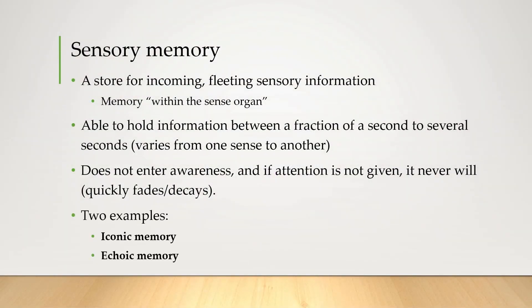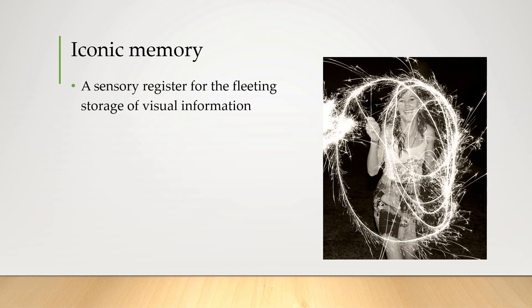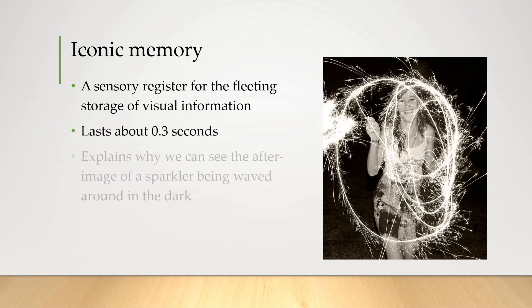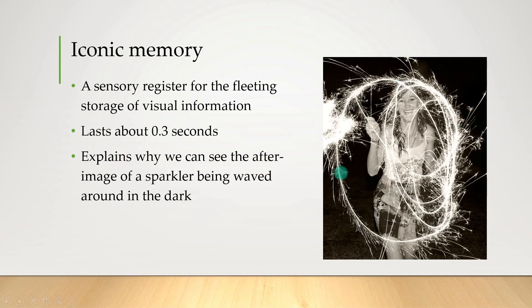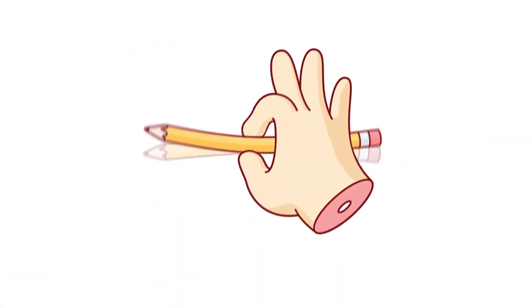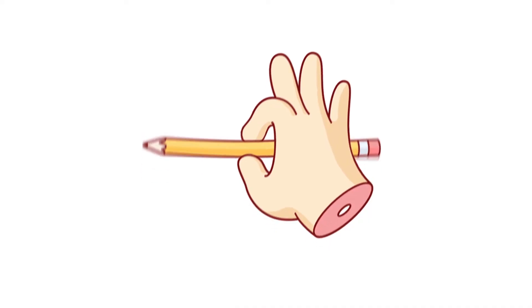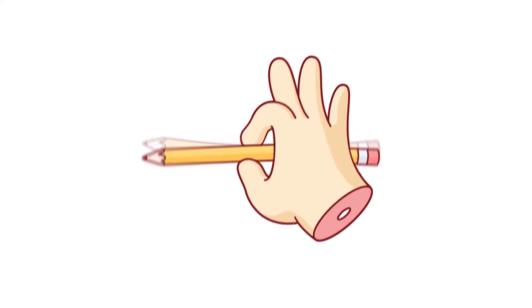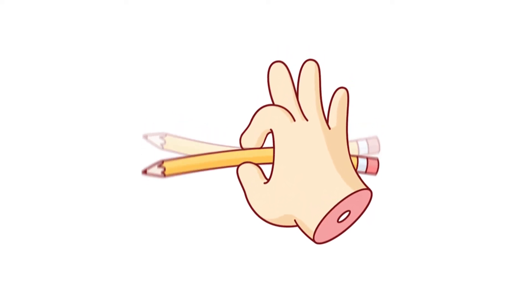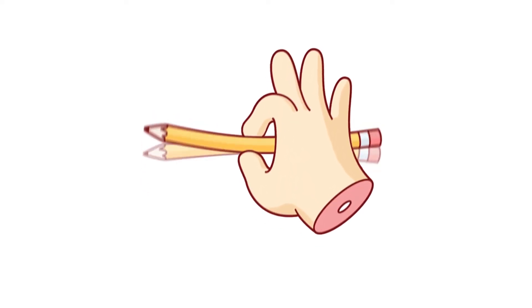We're going to look at two types of sensory memory: iconic and echoic memory. Iconic memory comes from the Greek word 'icon' meaning image, and this is a sensory register for the fleeting storage of visual information. It lasts about 0.3 of a second and explains, for example, why when a sparkler is being waved around in the dark we can see an after-image — like the trail it came from. Iconic memory also explains the floppy pencil illusion, and it even explains why this animated hand looks like it's moving — you're just looking at a video displaying 30 different pictures every second, but because of iconic memory it looks like fluid, smooth movement.